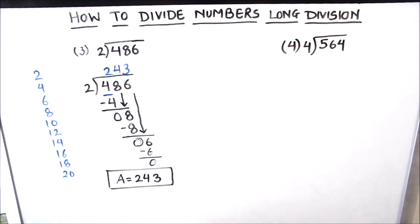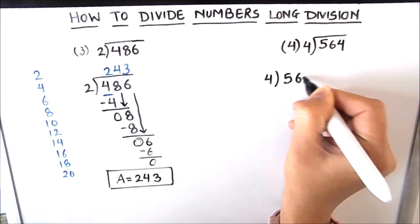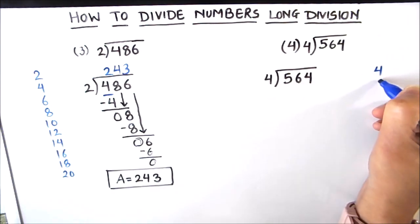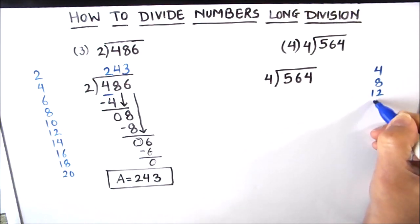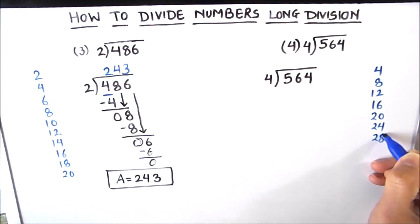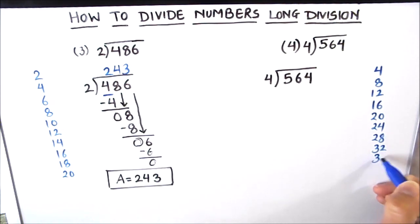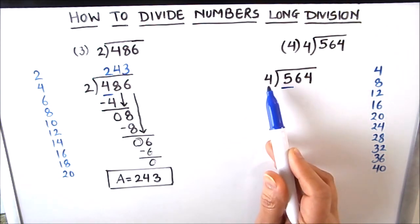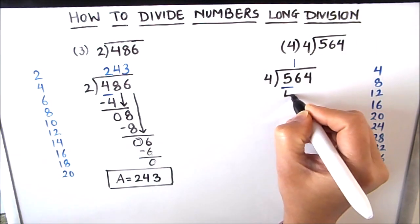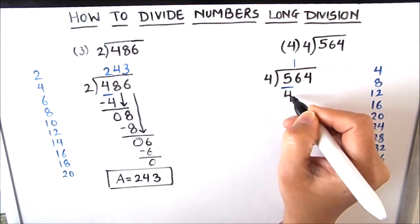We box the answer and move on to our next example: 564 divided by 4. The first step is to write the tables of 4: 4, 8, 12, 16, 20, 24, 28, 32, 36, and 40. Now we start dividing with the highest place value number in the dividend, which is 5. Since 5 is bigger than 4, we check how many times 4 goes into 5: 4×1=4. We write 1 in the quotient and 4 just below 5.